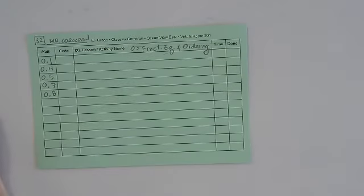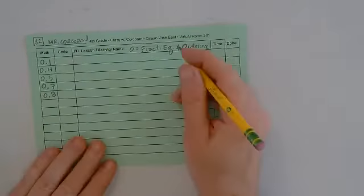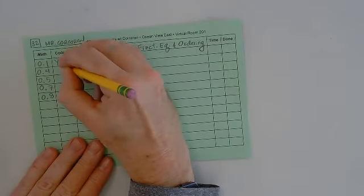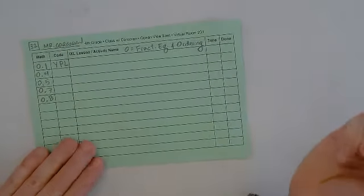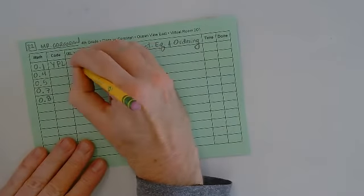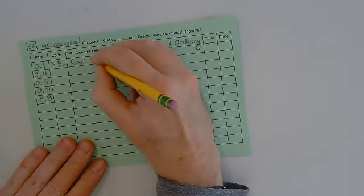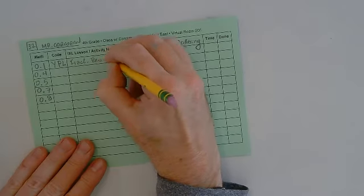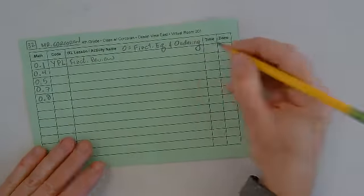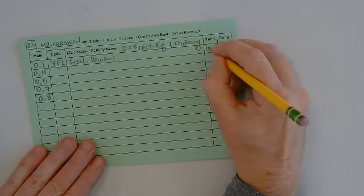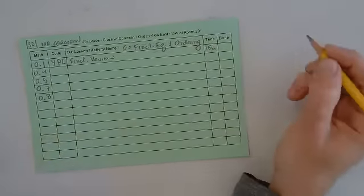So O1, fractions review. So this was a code YPL. And that was just fractions review. You can abbreviate also. And so if you spend 15 minutes on it. 15 minutes is great.